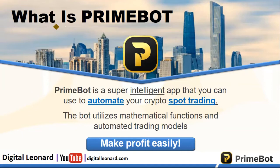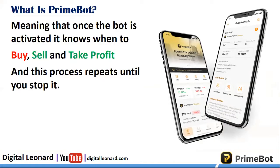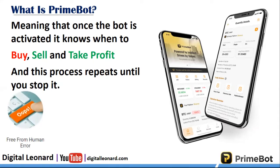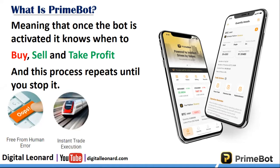That is when this bot comes into play. This bot helps you automate those methods using what is called DCA — DCA stands for dollar cost averaging — to actually make profit on a daily basis using the artificial intelligence embedded into it. Once the bot is activated, because of the artificial intelligence built into it, the bot knows when to buy, when to sell, and when to take profit for you. And all of these things are done automatically, and it is free from human error.